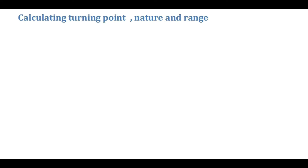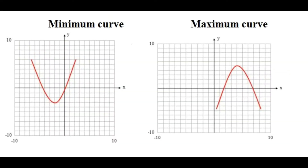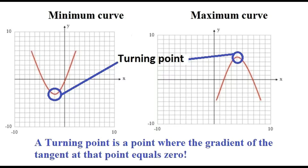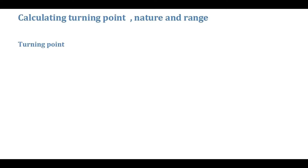So how do we calculate the coordinates of the turning point? For a quadratic, we have two options: we can either have a maximum point from a maximum curve, or a minimum point from a minimum curve. The turning points are highlighted in blue. Turning points are points whereby if you draw a tangent, the gradient of that tangent is zero. So let me show you how to work out the coordinates of the turning point for a quadratic.